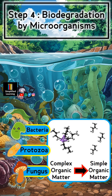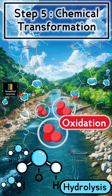Step 4 is biodegradation by microorganisms. Naturally occurring microorganisms such as bacteria, fungi, and protozoa in the river water and sediments feed on organic pollutants. These microorganisms break down complex organic compounds into simpler, less harmful substances through biochemical reactions. Aerobic bacteria are particularly active in well-oxygenated water, while anaerobic bacteria can work in sediments and deeper water with lower oxygen levels.